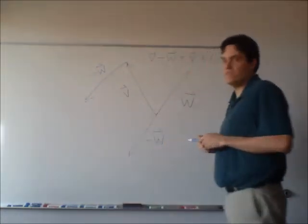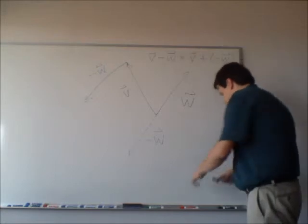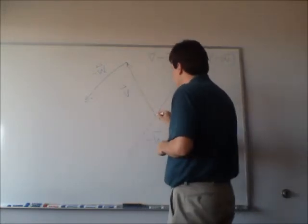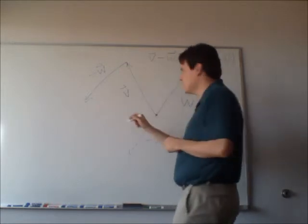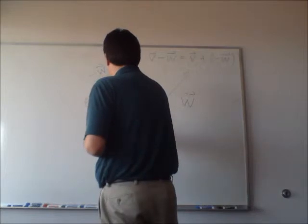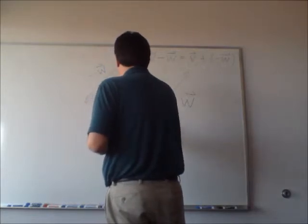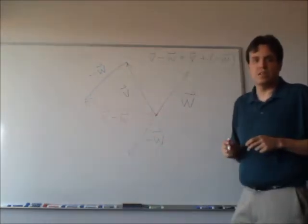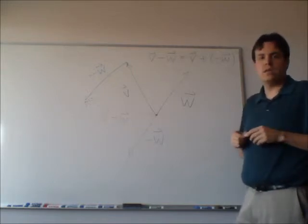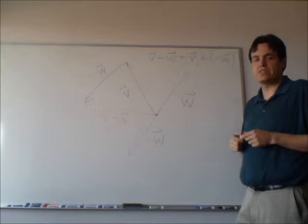Which means that V minus W should look like this. It should go from the initial point of V to the end point of negative W. And that's my V minus W there, the one in red. Okay, that's one way. You can subtract by adding the opposite of a vector.